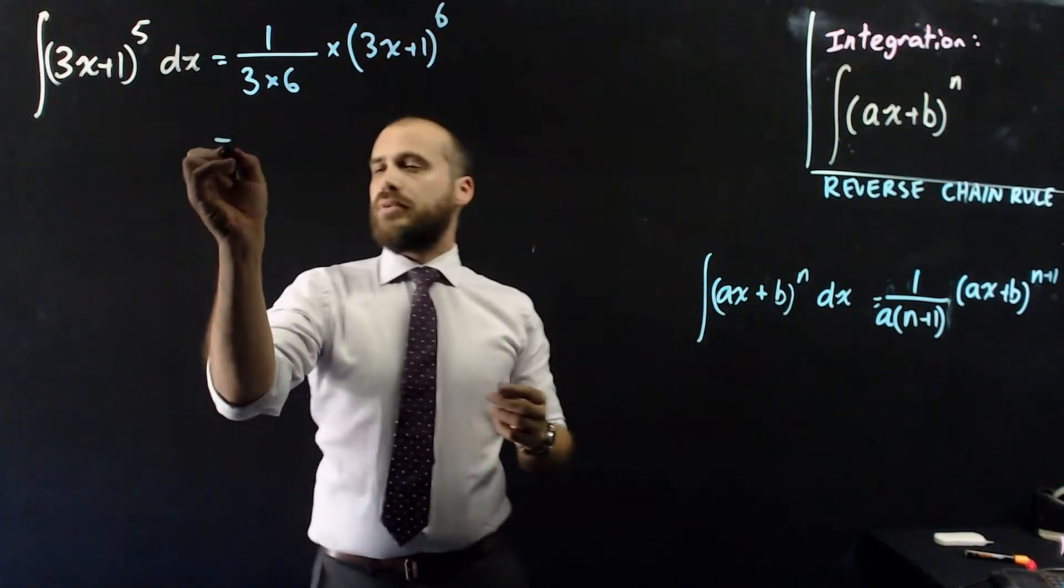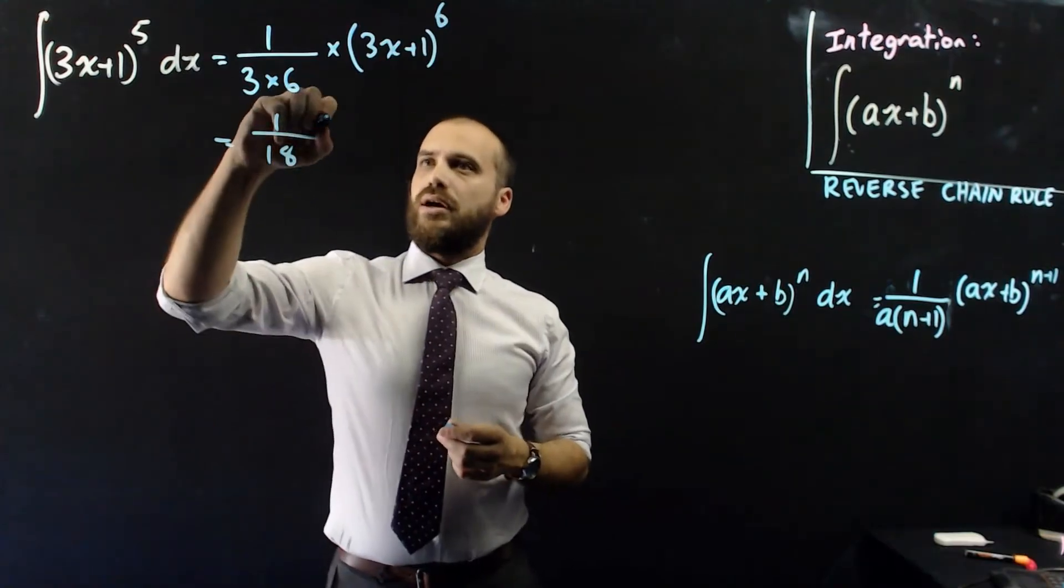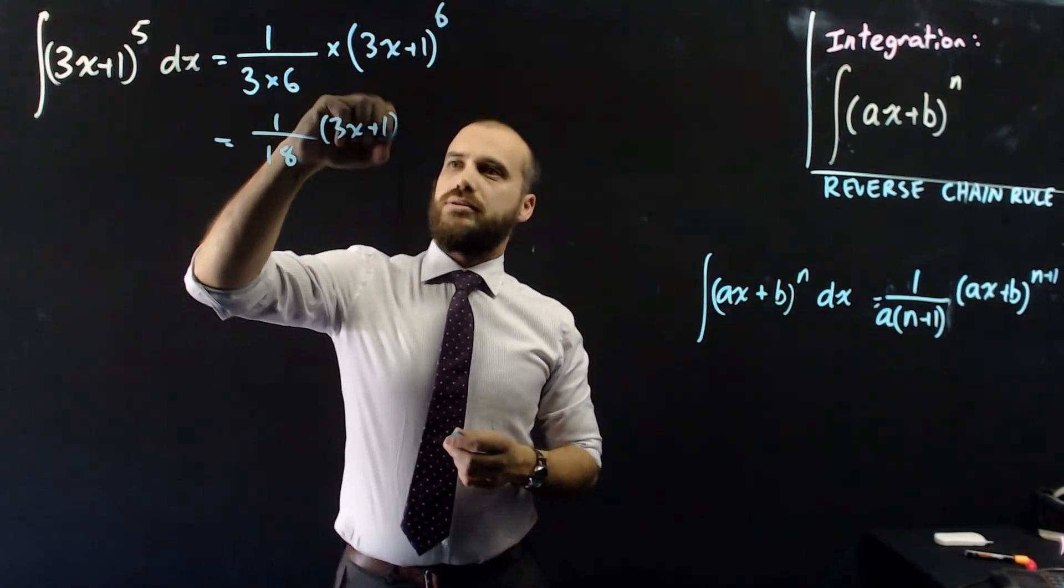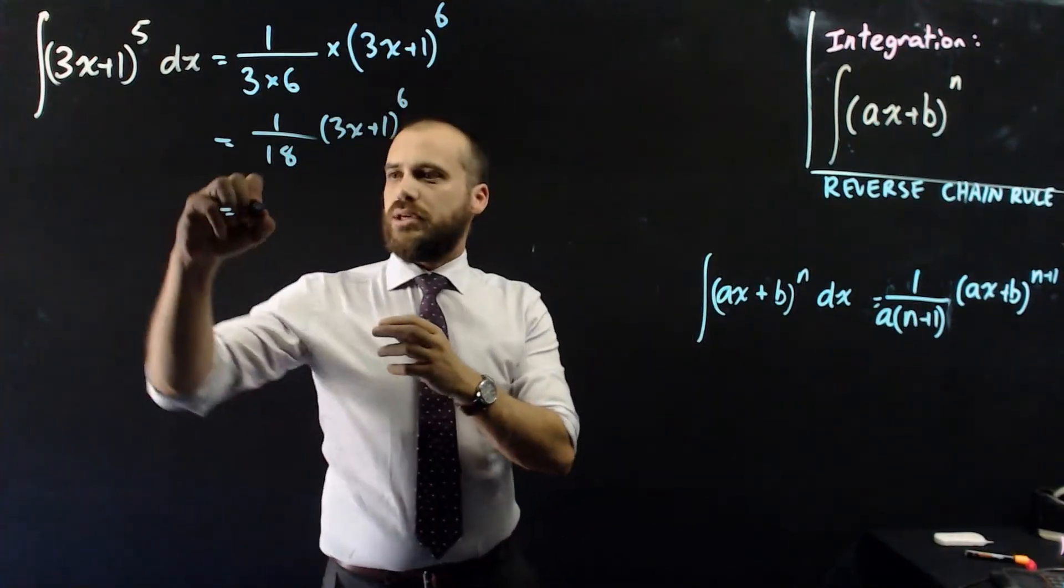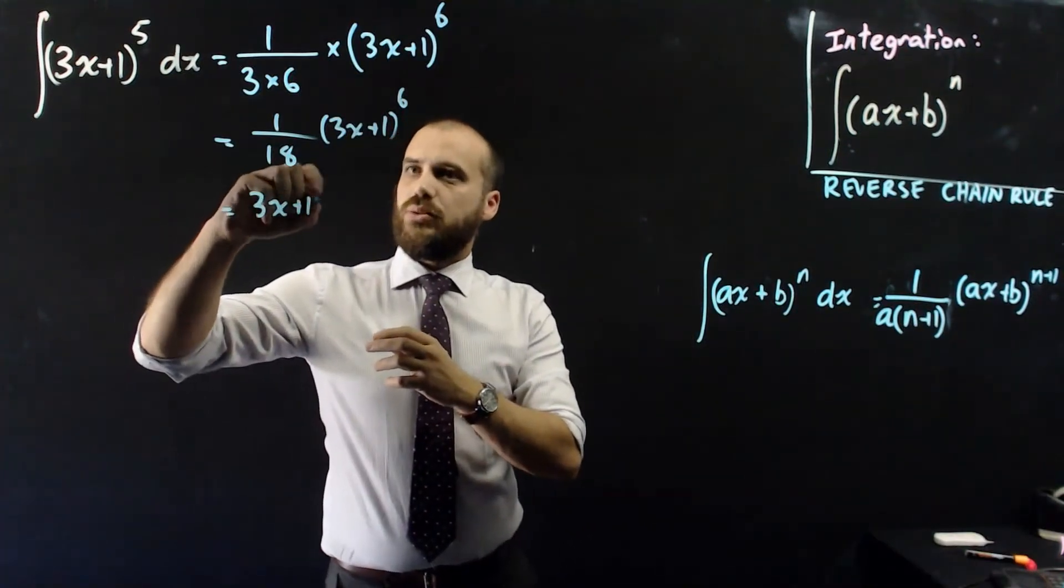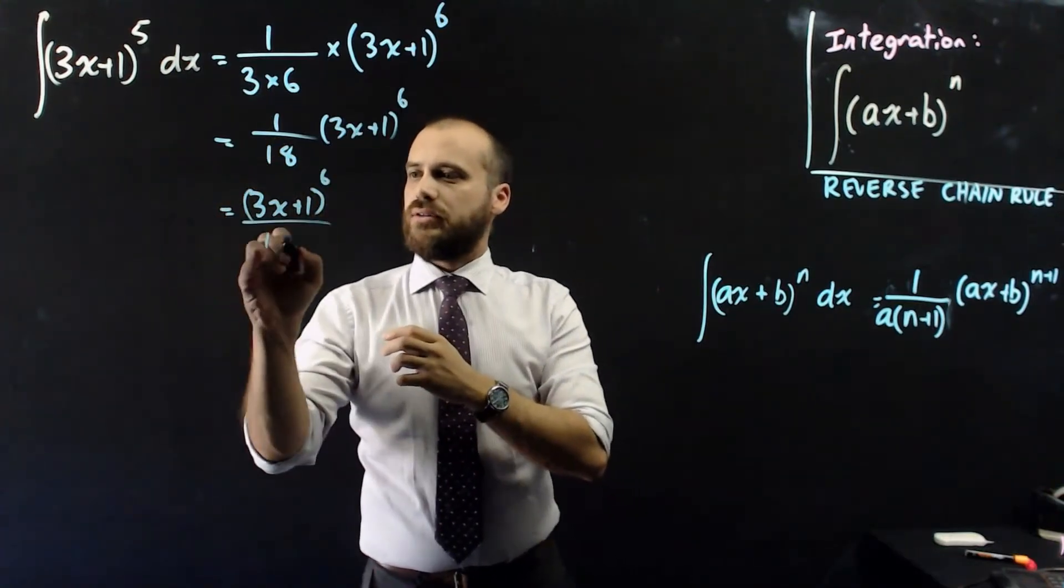Okay, so then we get like 1 over 18, 3x plus 1 to the power of 6. An alternative way to write that would be 3x plus 1 to the power of 6 over 18.